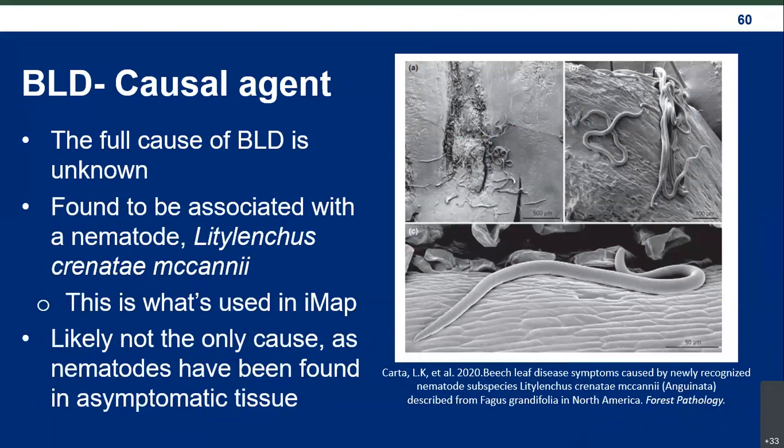Since this disease was just found in 2012, there's a lot we don't know. Researchers at universities, arborists, and foresters are trying to figure out what exactly is going on. What we've found so far is that it's associated with a nematode called Litylenchus crenatae maccani. This is what's used in iMapInvasives — when you want to report beech leaf disease, search for the beech leaf disease nematode or Litylenchus and it'll pop up. This is likely not the only cause, as nematodes have been found in leaves without symptoms. It's basically a microscopic worm.